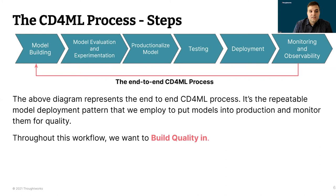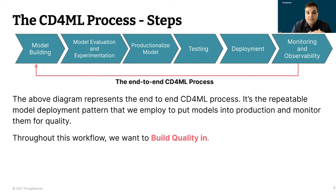Model building is the process of building a model — we need to select the right classifier or regression model and what package to use. We need to evaluate and experiment, down-selecting from hundreds of different models to choose the one we want to promote to production. Productionization involves things like making APIs and UIs around it — how do we take that trained ML model and put it into production? Testing covers integration and unit tests to confirm everything is working as expected, including contract tests and CI work.